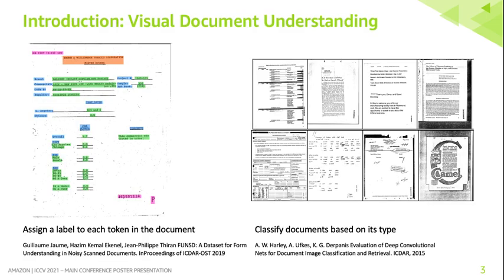Visual document understanding, or VDU, is a relatively new area of research where the general goal is to make sense of content present in documents. What is interesting about this domain is that an approach needs to consume all three modalities — visual, language, and layout — for superior performance. Here we show two popular datasets: FunSD on the left, where the task is sequence labeling, and RVLCDIP on the right, where the task is to classify each document.